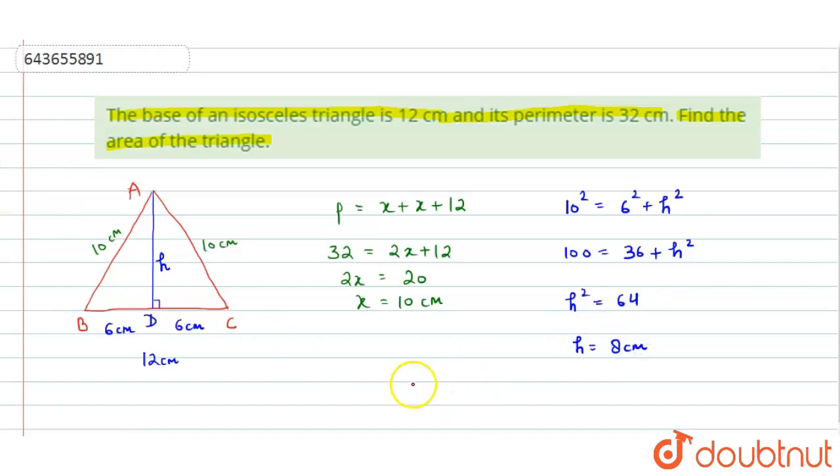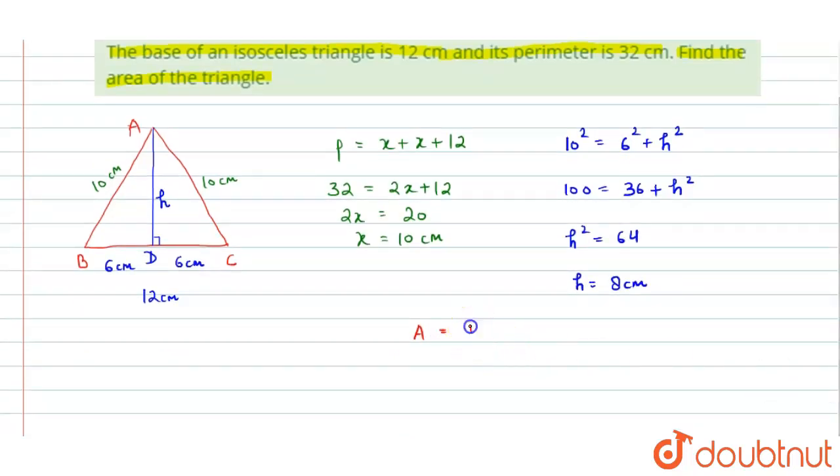Now area will be equal to half into base into height. Putting the values, half into base is 12 centimeter and height is 8 centimeter, and this gives us 48 centimeter square.